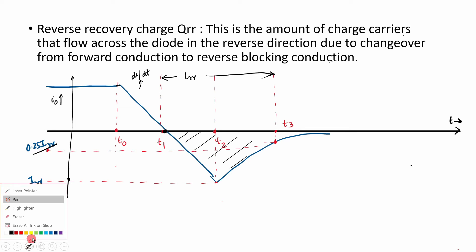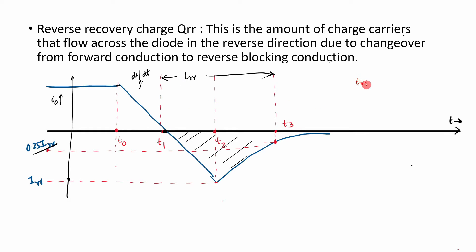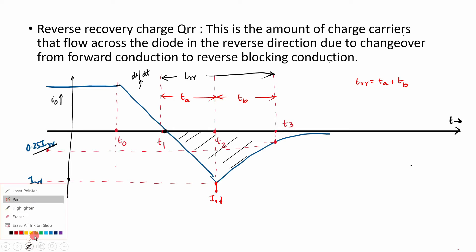This graph has two parts. For these two parts we have defined two times: TRR is equal to ta plus tb, where ta is due to the charge stored in the depletion region and tb is the charge generally stored in the bulk of the semiconductor. So total TRR equals ta plus tb. With reference to this, you can clearly divide the graph into two portions, and this value IRR is the peak reverse recovery current.